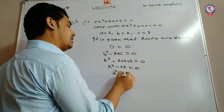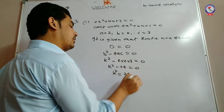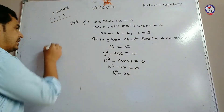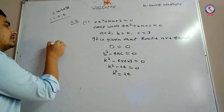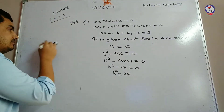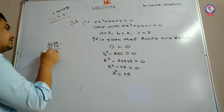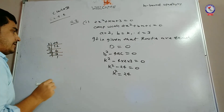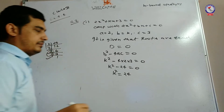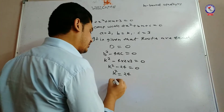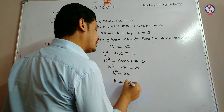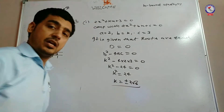k squared is equal to 24. When we find the root of 24: 24 = 2×12 = 2×2×6 = 2×2×2×3. So we can write 2 root 6. Therefore k is equal to plus or minus 2 root 6 is the answer.